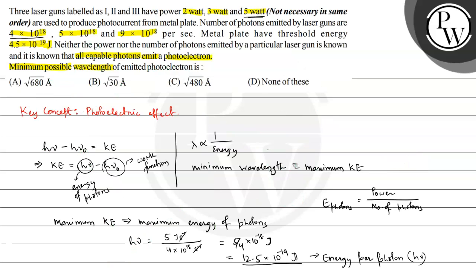The approximately correct value is option B: √30 angstroms. This is the required answer, and I hope you understood the concept well. Best of luck!